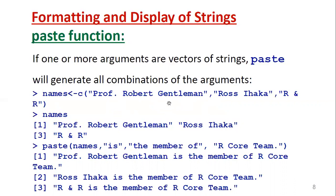Initially these are all the developers of our R software. Later the R project made it a core team. With these two developers' starting letters — R and R — the software was named R. So R doesn't have a long-form abbreviation; it comes from the two developers' starting letters. This vector is stored in the variable 'names'. Whenever you call 'names', the three names will be displayed: Professor Robert Gentleman, Ross Ihaka, and R and R.